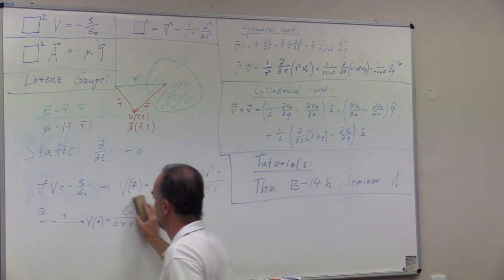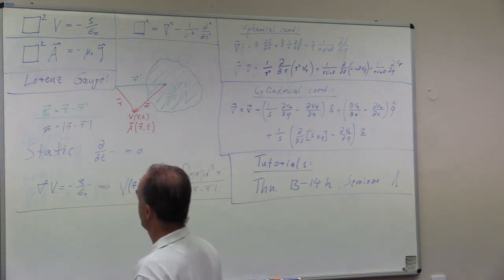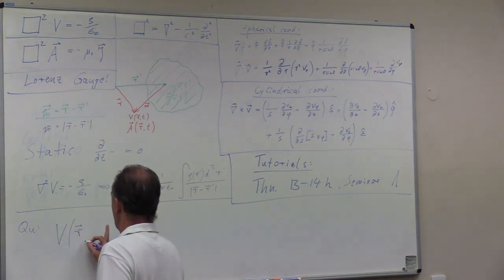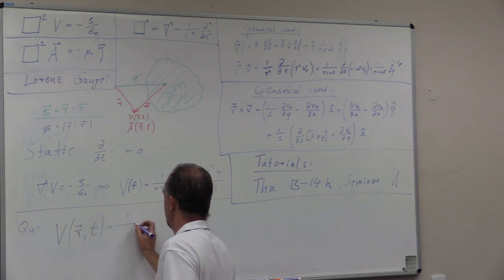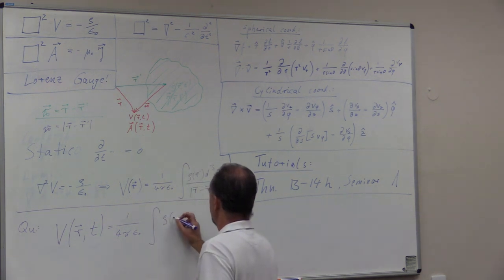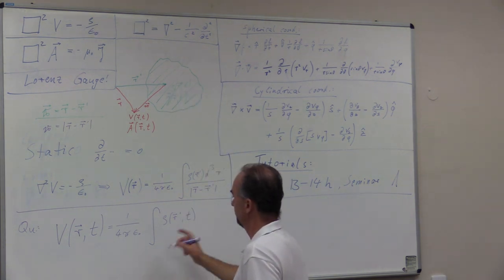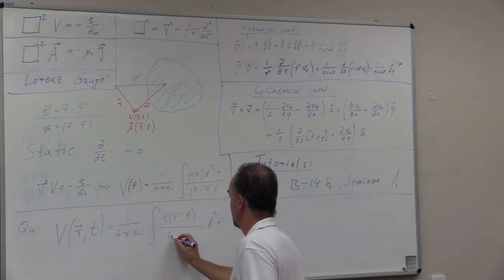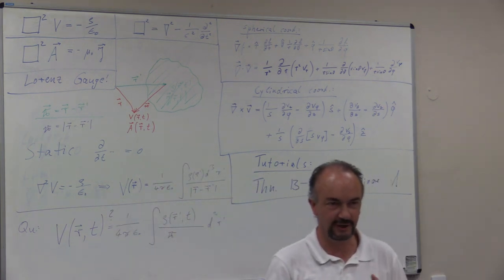So now, if we are no longer static, can we do the same thing? Can we write the potential at our point R at time T as simply 1 over 4πε₀, integrating rho at any point in our volume at the same time T over the distance? We don't care about the times for now.